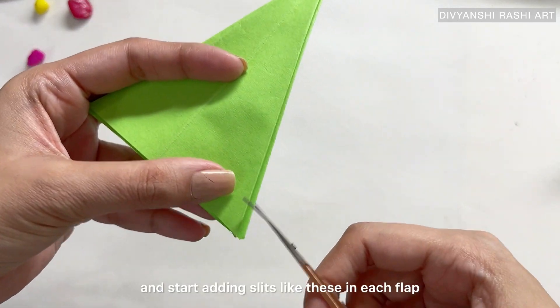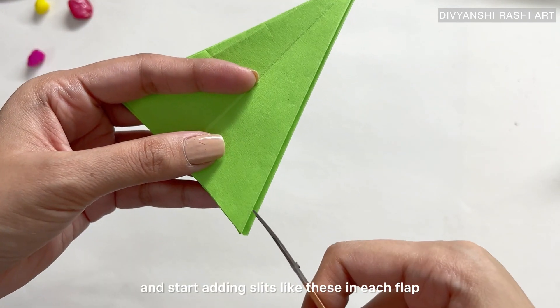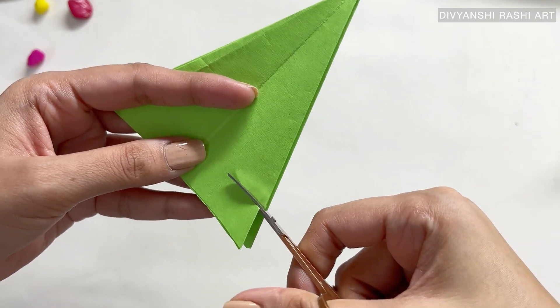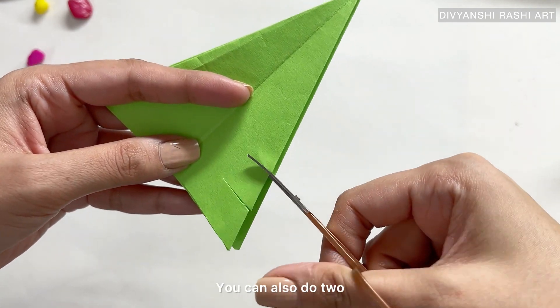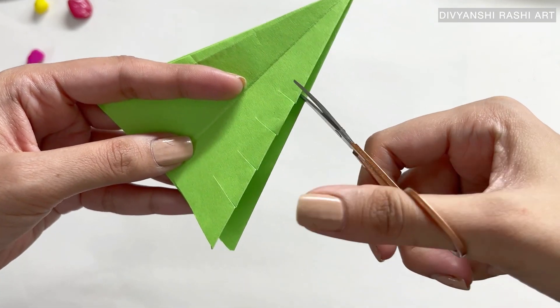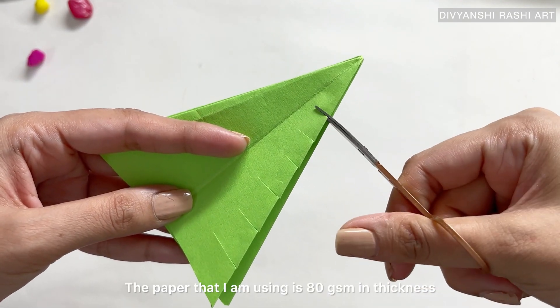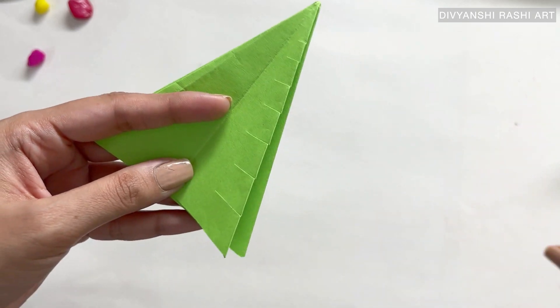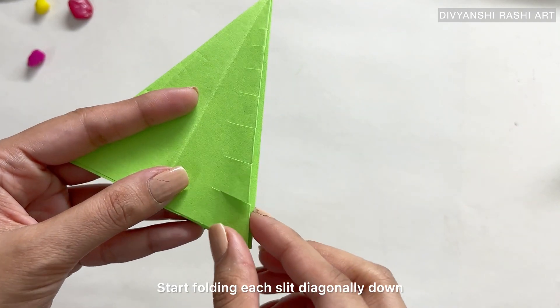Take your scissors and start adding slits like this in each flap. You can also do two or more flaps together if your paper is really thin. The paper that I am using is 80 GSM in thickness. Start folding each slit diagonally down.